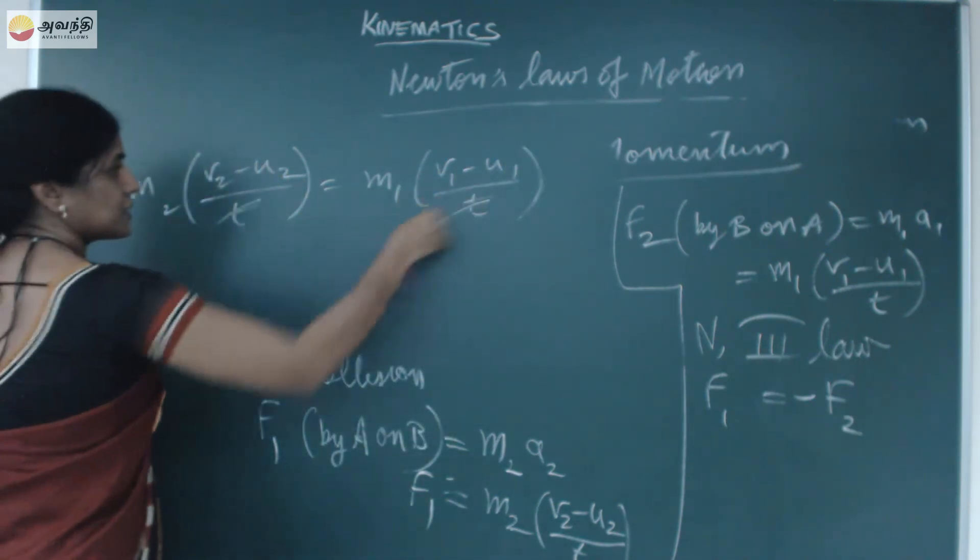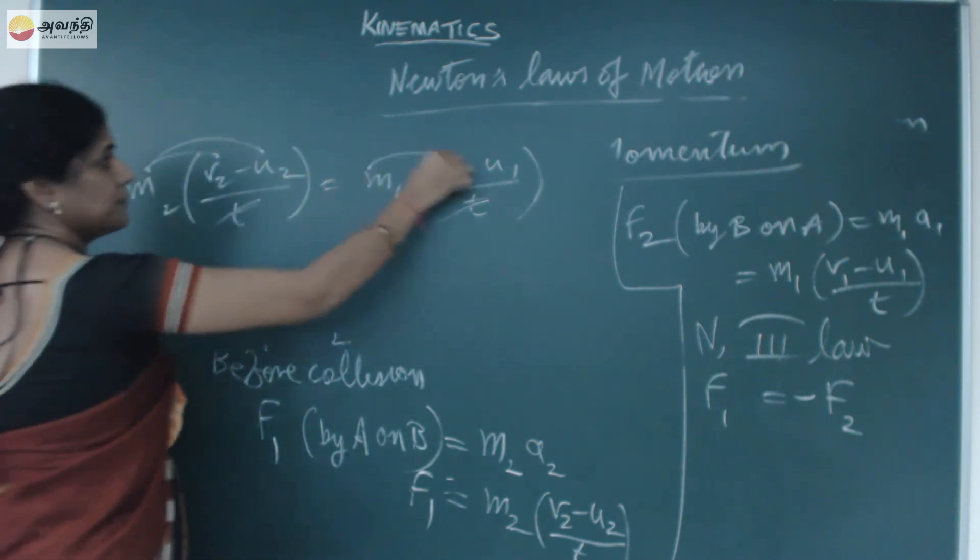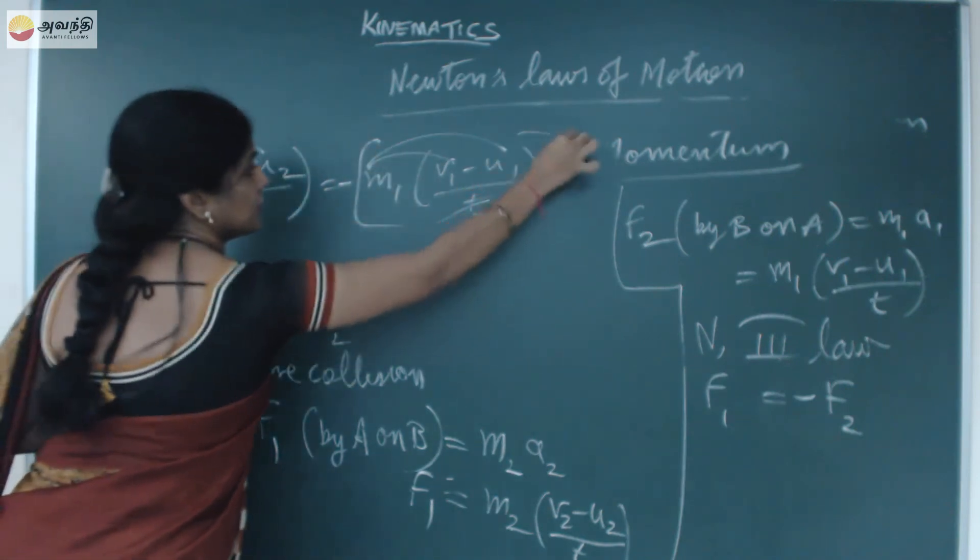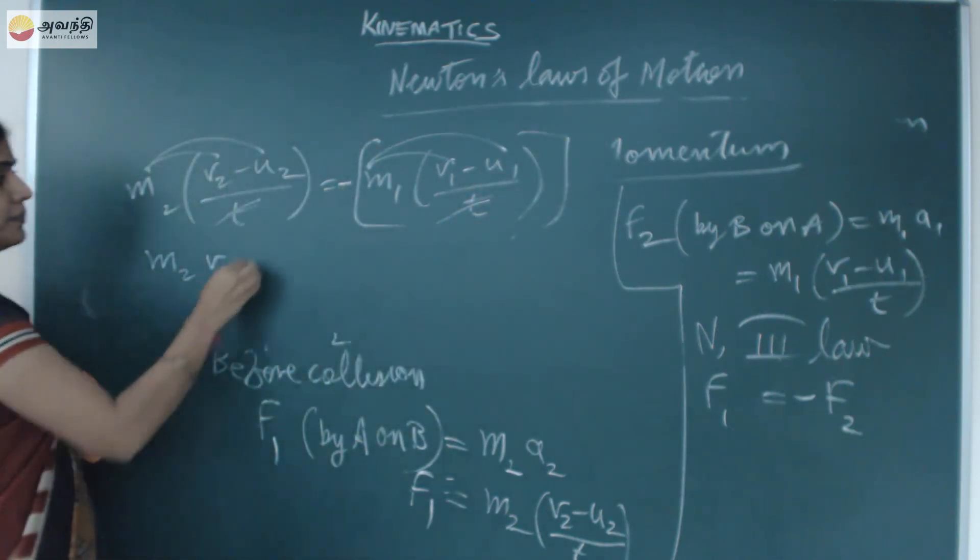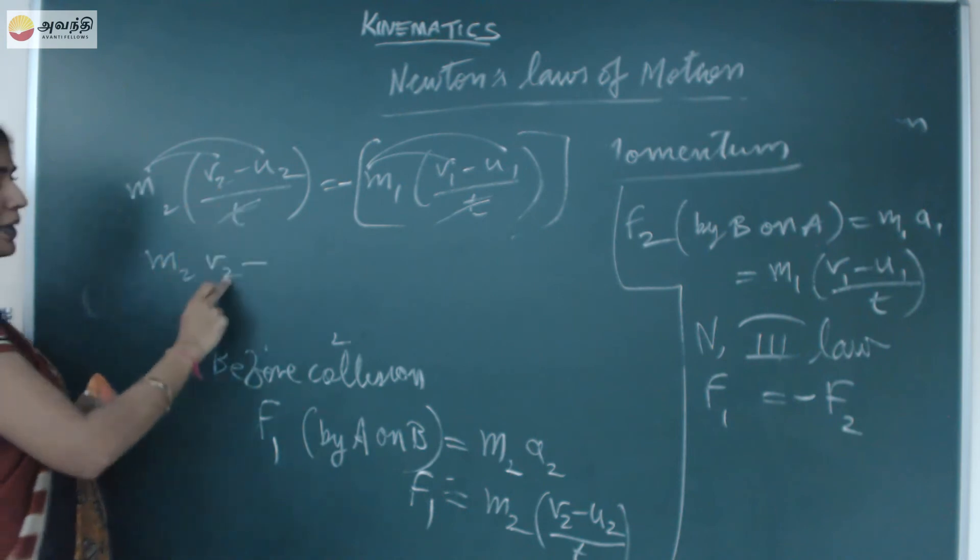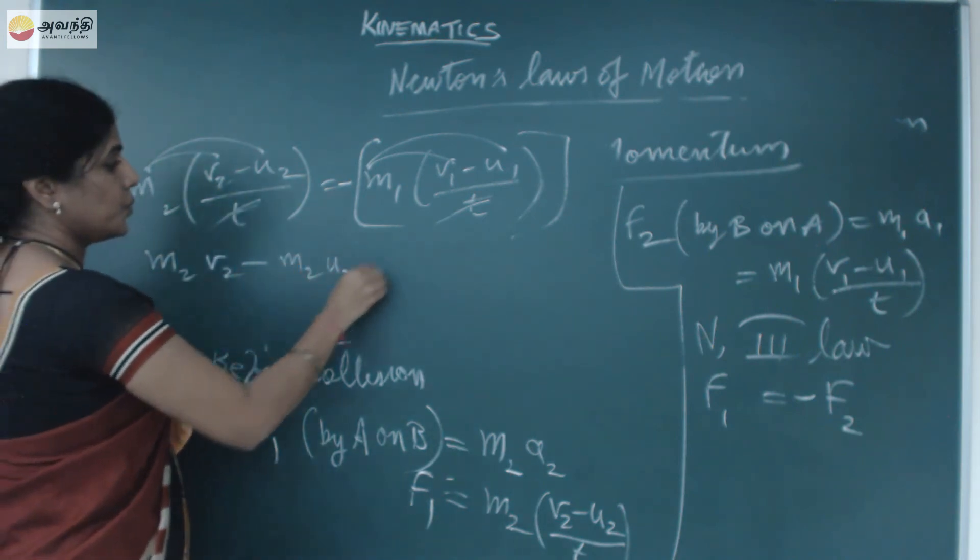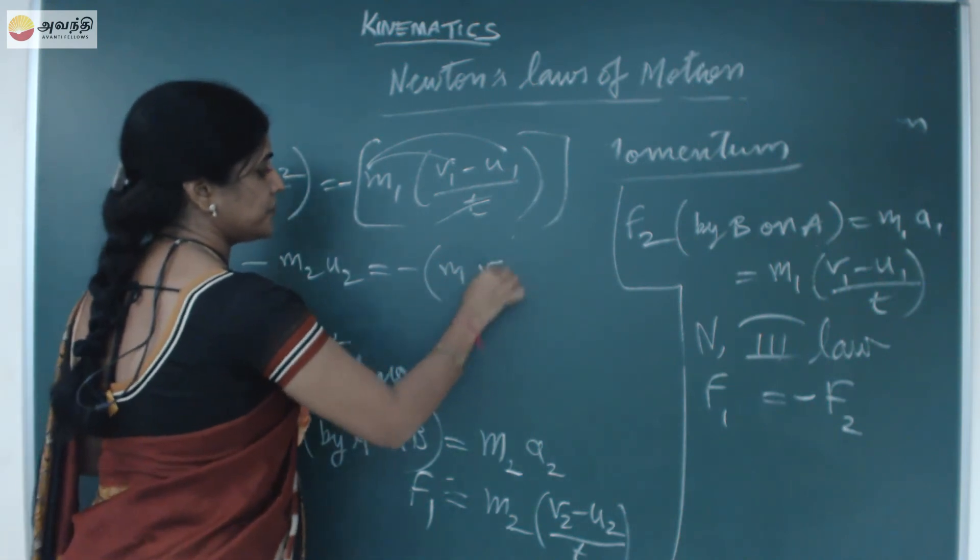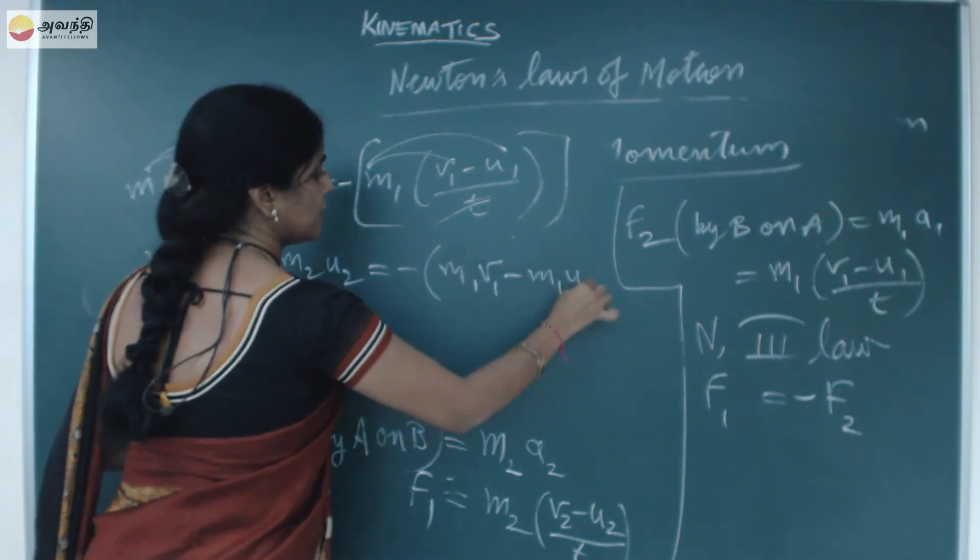F1 is m2 into v2 minus u2 by T equals minus m1 into v1 minus u1 by T. T gets cancelled. Take m2 inside. So m2 v2 minus m2 u2 equals minus m1 v1 minus m1 u1.